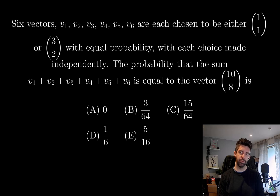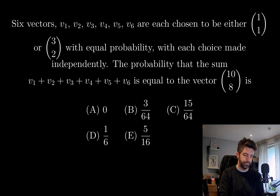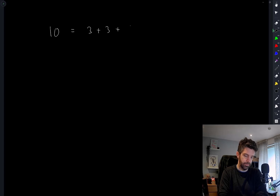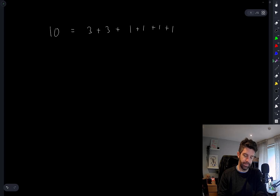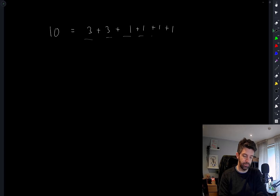We have to figure out first how many different combinations of adding these vectors (1,1) and (3,2) together can possibly result in (10, 8). Looking at the first coordinate, 10 can be written as 3+3+1+1+1+1, and that's the only way of doing it — how else would you get 10 using only 3s and 1s with exactly 6 elements?